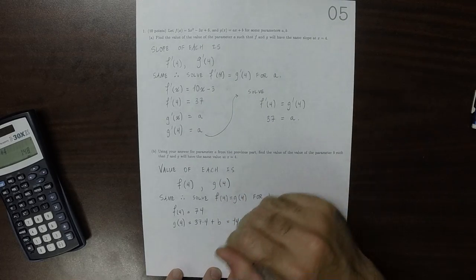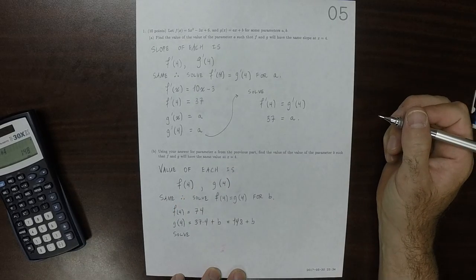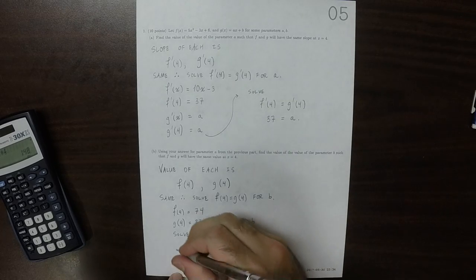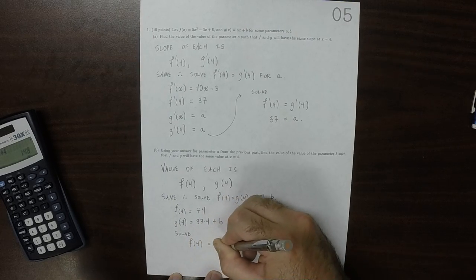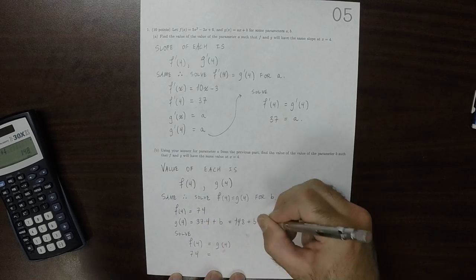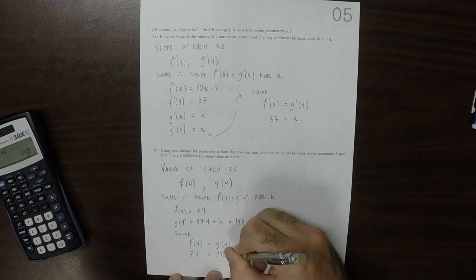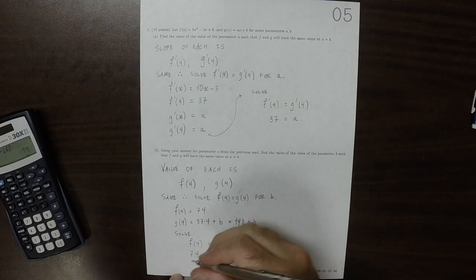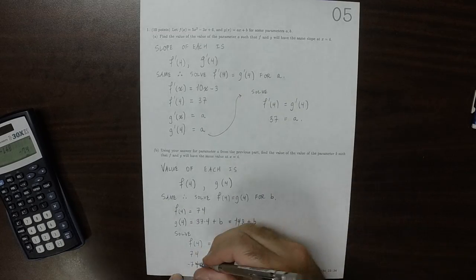And then now we want to solve. So, that means we want to solve f of 4 equal g of 4. So, 74 is 148 plus b. So, negative 74 is b.